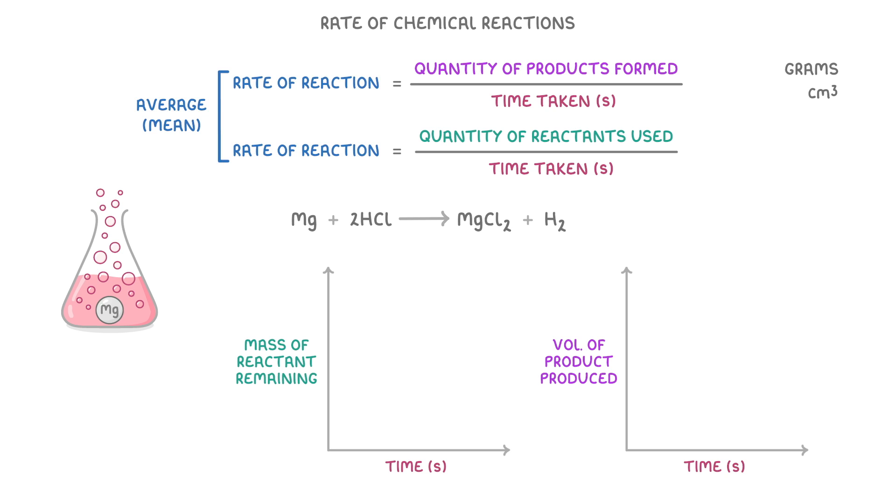So, on our left graph here, if we started with 3 grams of magnesium, then the mass of our reactant would start at 3 grams, and at first fall quite rapidly, but then it would slow as the reaction progresses, and it gets used up less quickly.